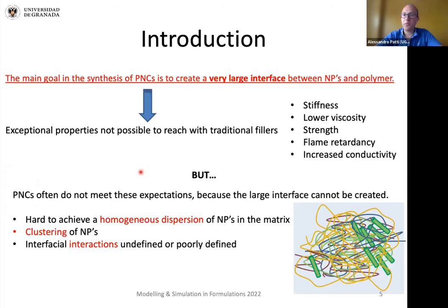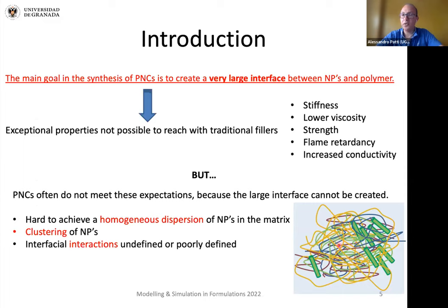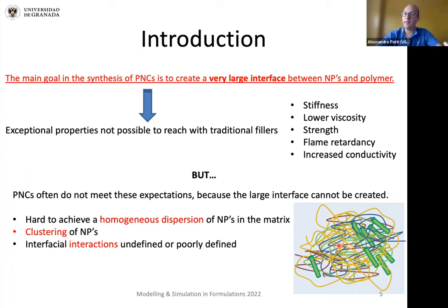However, achieving this is not really trivial because nanoparticles tend to phase-separate in the polymer matrix. And why? Because by doing so, the polymer chains would have additional free volume. So their entropy would increase, which means that the free energy of the system would decrease and make this configuration more thermodynamically favorable.